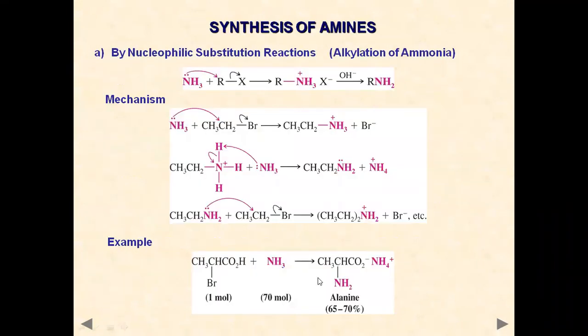The first reaction is an example of a nucleophilic substitution SN2 reaction, known as alkylation of ammonia. When we react ammonia with an alkyl halide, we get an alkyl ammonium halide, which on hydrolysis in basic medium yields an alkyl amine. We use excess ammonia in this reaction — I will explain why after covering the mechanism.